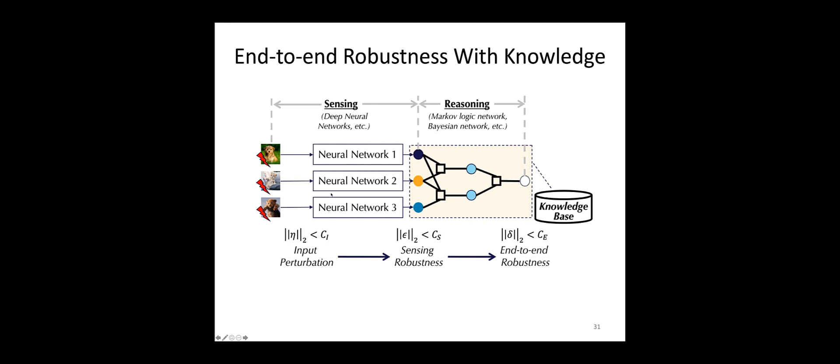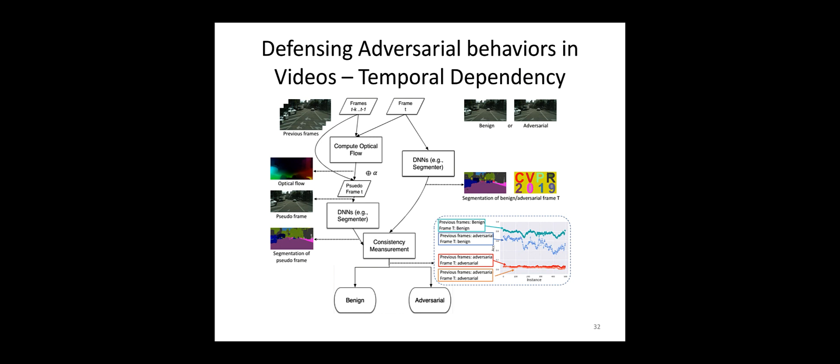This framework is very generic — the knowledge can be anything. For example, we can encode knowledge such as 'a stop sign always has a certain shape' or 'if other cars stop, you should also stop.' I will give a simple example of using statistical knowledge in the form of temporal consistency to improve the robustness of object detectors on video data. If we have videos where some frames are adversarially attacked, we want to detect those adversarial frames.